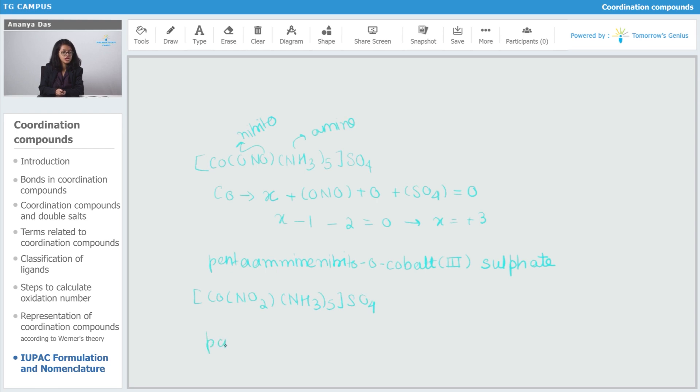If it would have been NNO, the name would have been pentaammine nitrito-N cobalt (III) in Roman numerals and enclosed in parenthesis and then just sulphate.